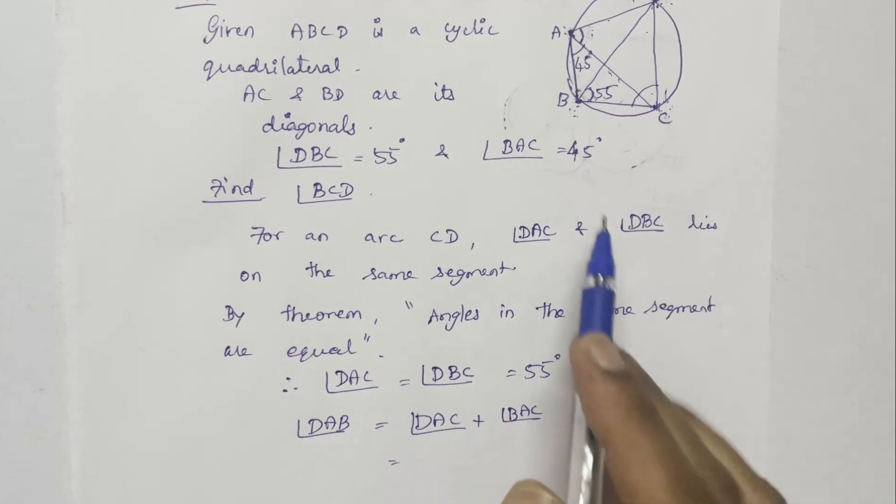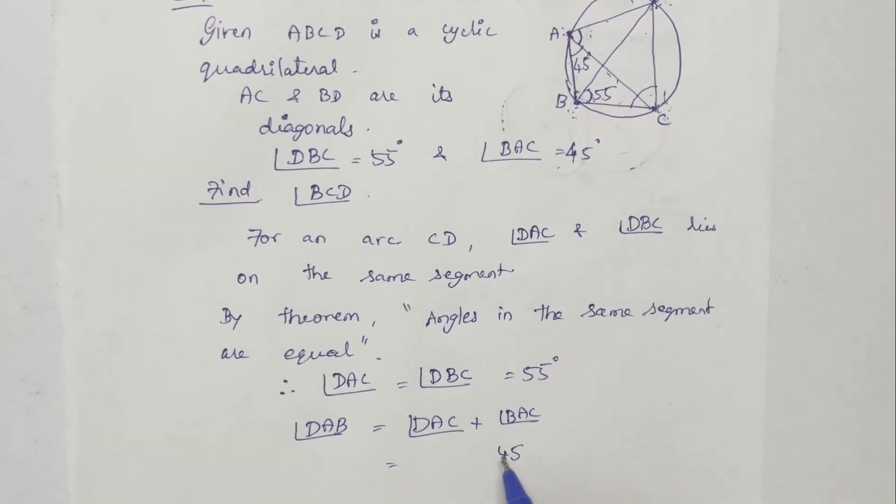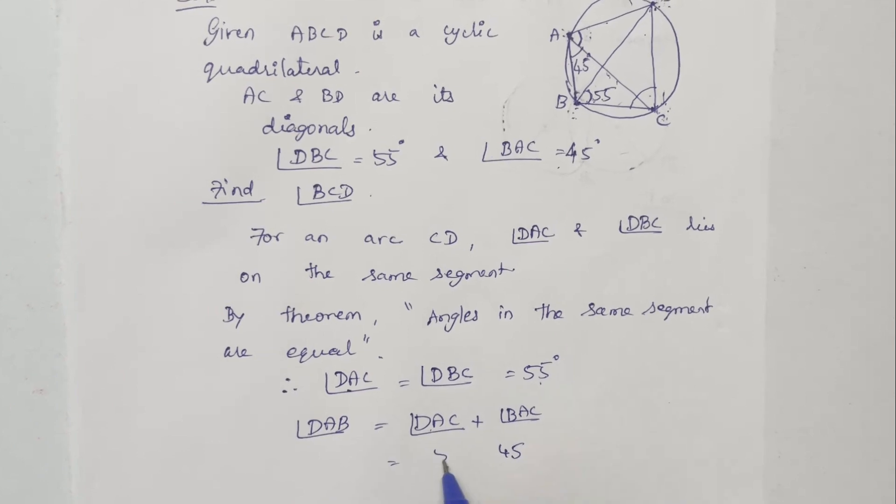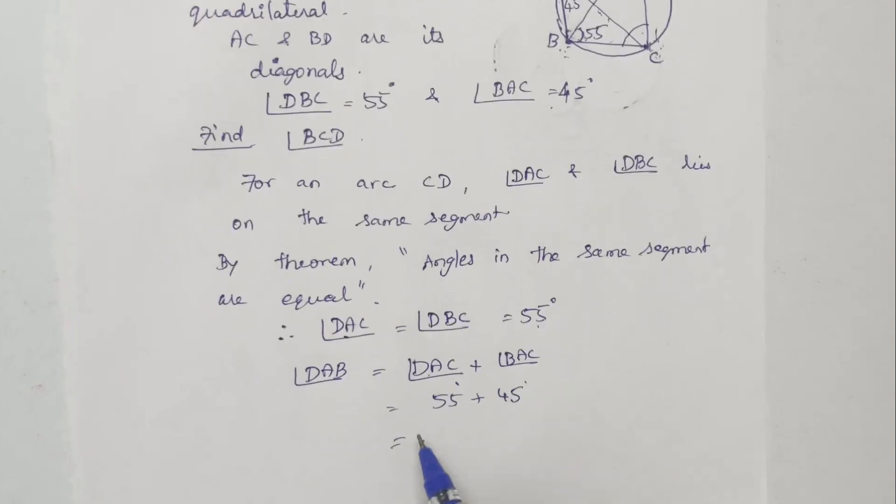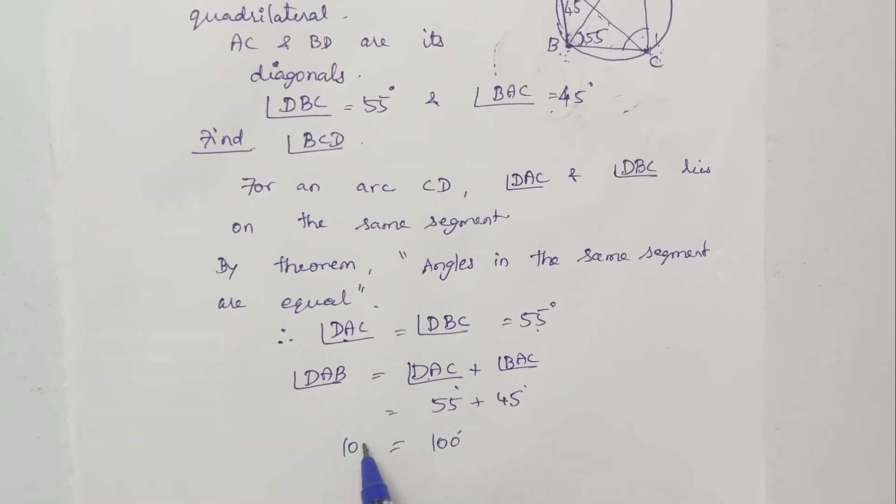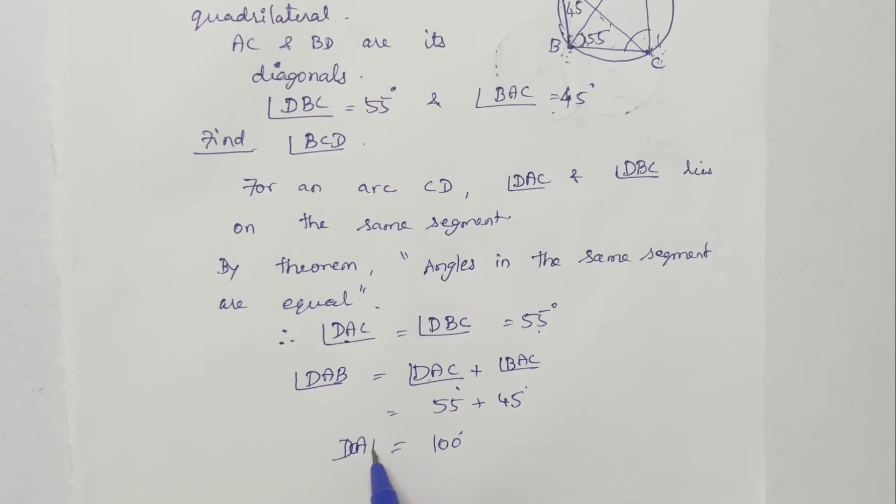Since DBC equals 55 degrees and BAC corresponds to 45 degrees, then DAC equals 55 degrees. Therefore, angle DAB equals 100 degrees.